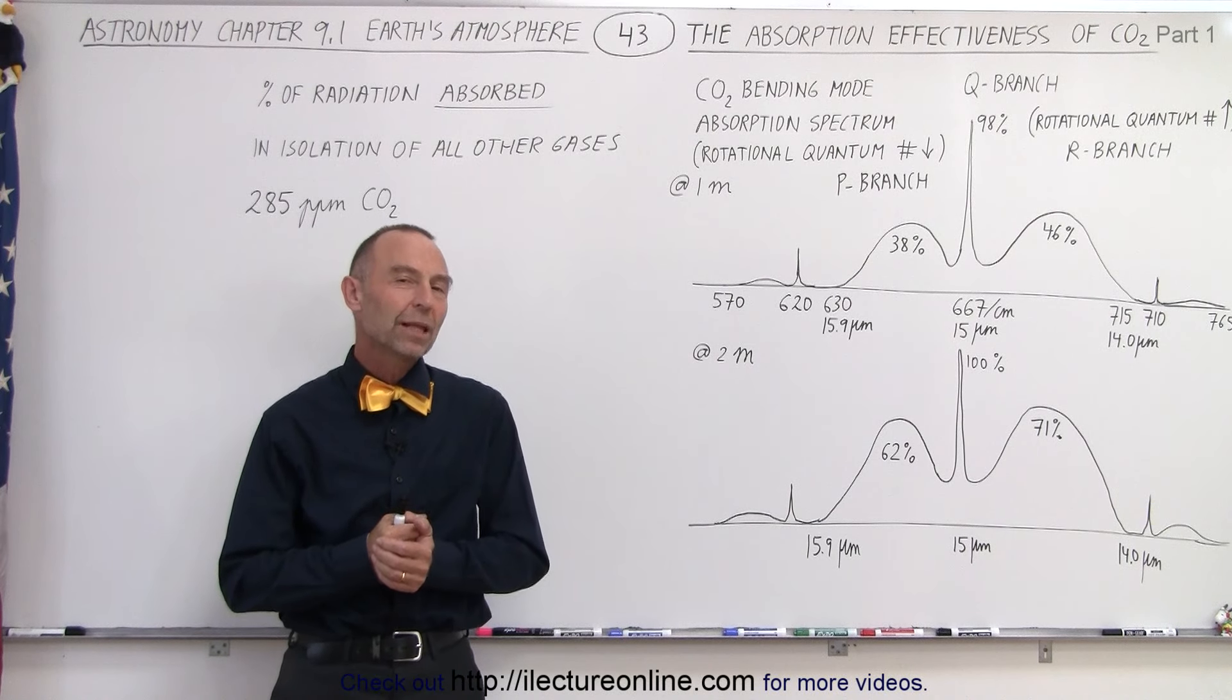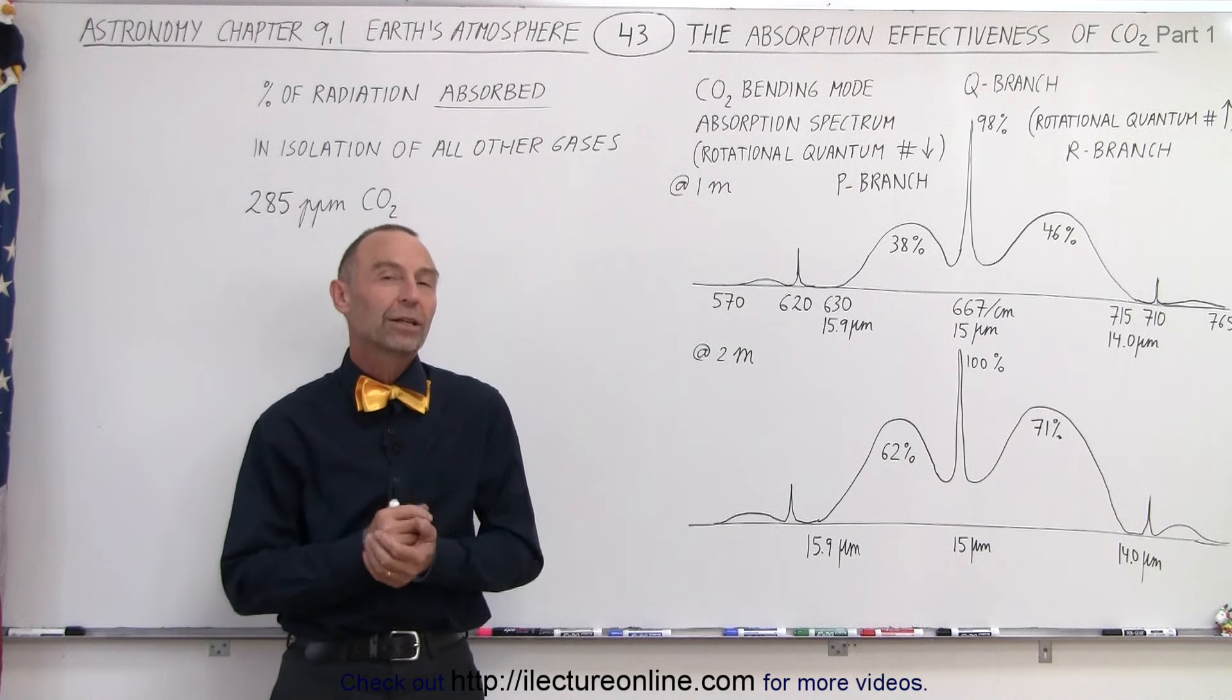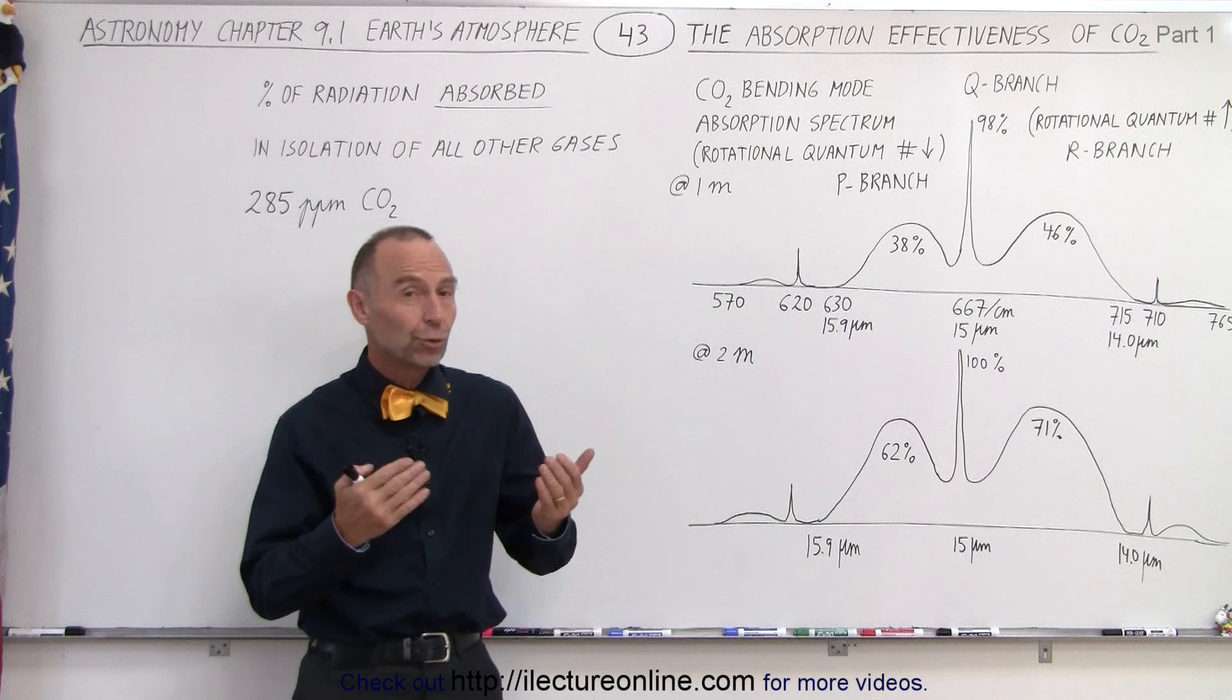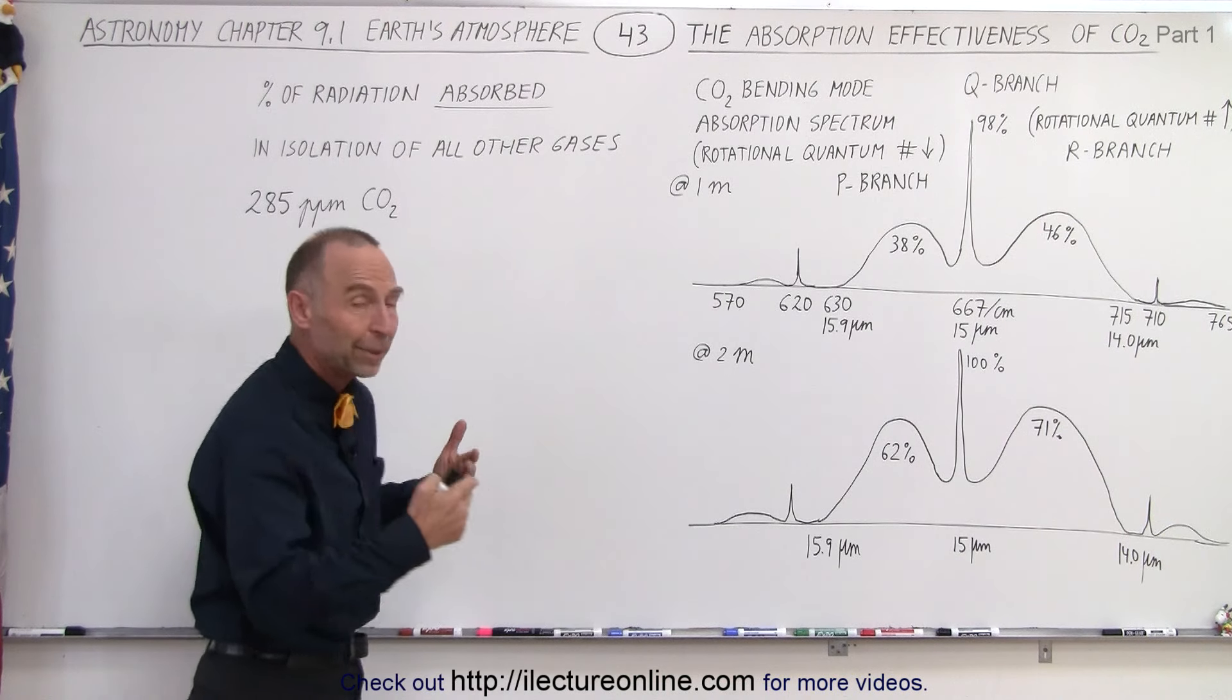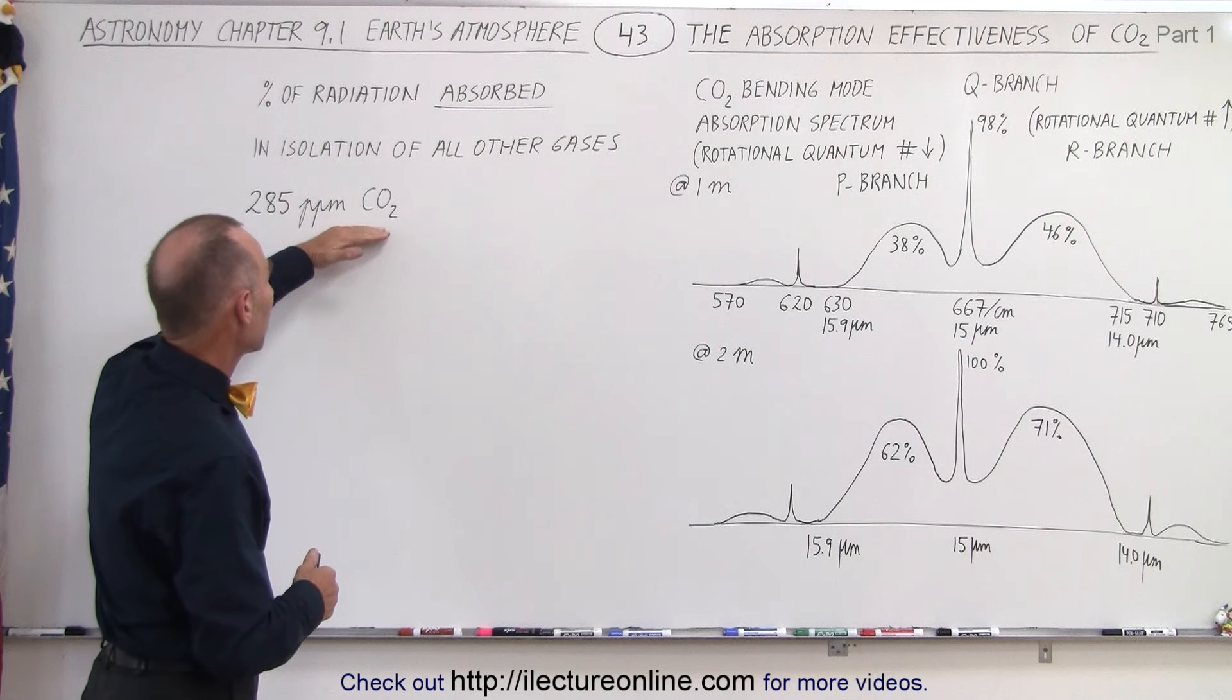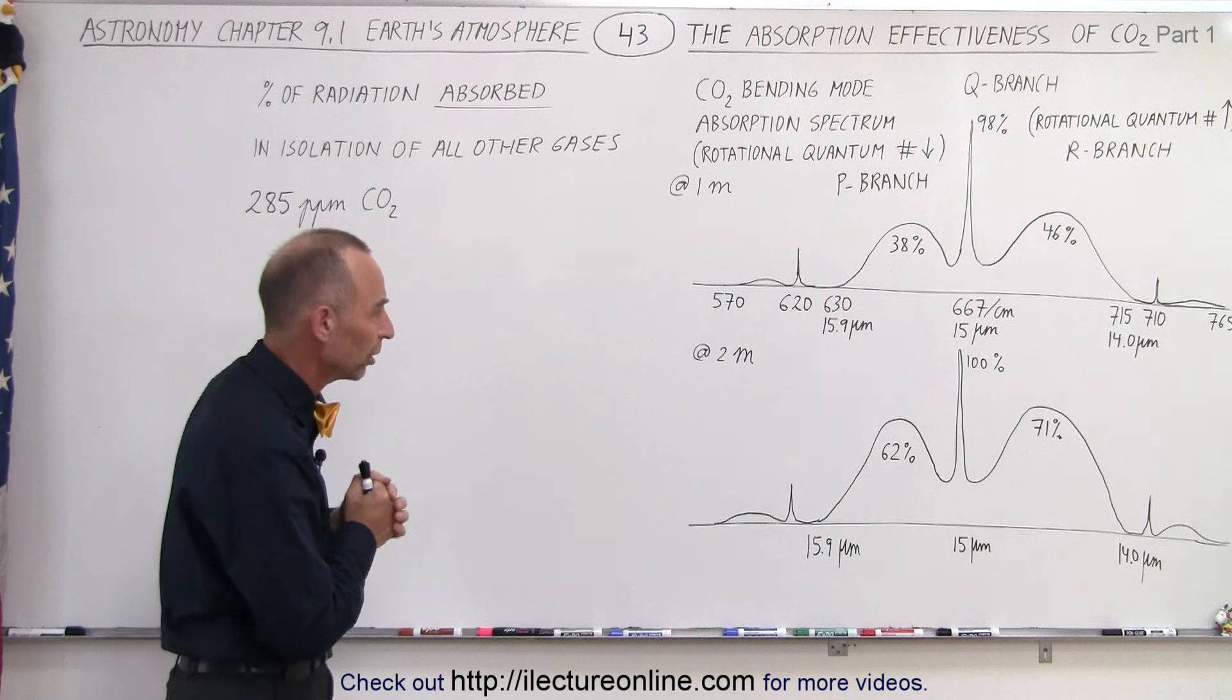Welcome to Electronline. Now let's take a closer look at the ability of carbon dioxide to absorb energy emitted from the surface of the Earth. We're going to look at two hypothetical examples. We're going to start with the concentration of carbon dioxide of 285 parts per million, which is what it was before the Industrial Revolution started.